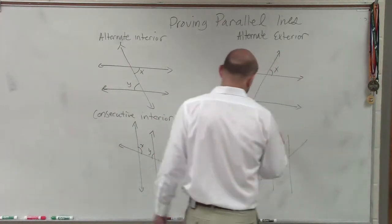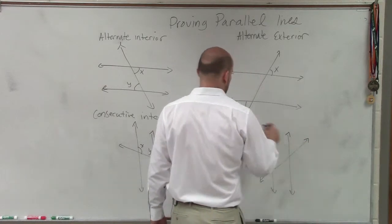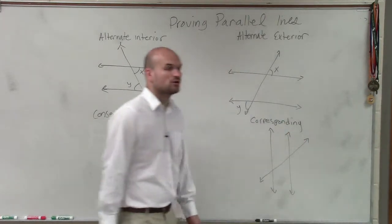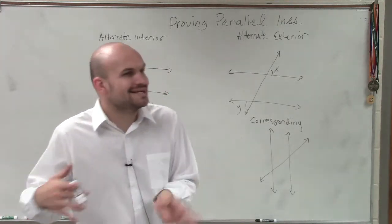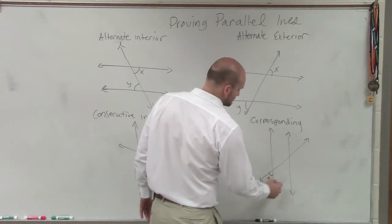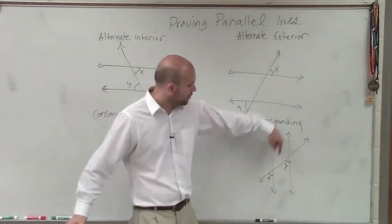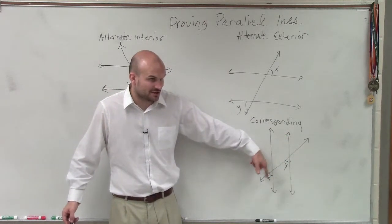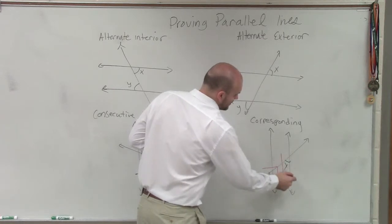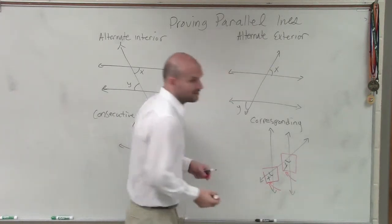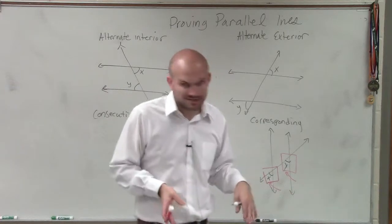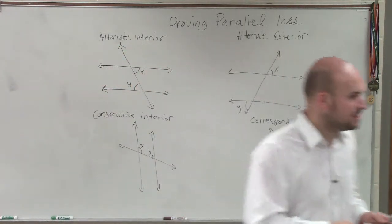And then the last one is corresponding angles. Remember, corresponding angles - one is interior, one is exterior, and they're in the exact same position as the other angle. Do you see how y is interior, x is exterior? But both of these, if I was to take a little snapshot of a grid, both of them are in the lower left-hand corner. So corresponding angles are in the same position of an intersection where one is interior, one is exterior. You guys have to remember each one of those relationships.